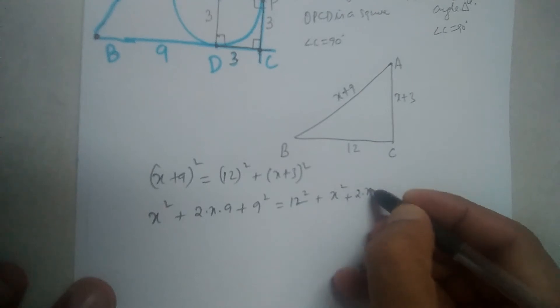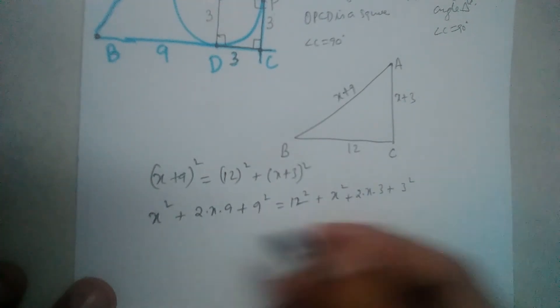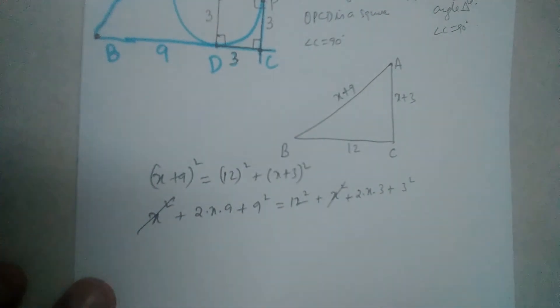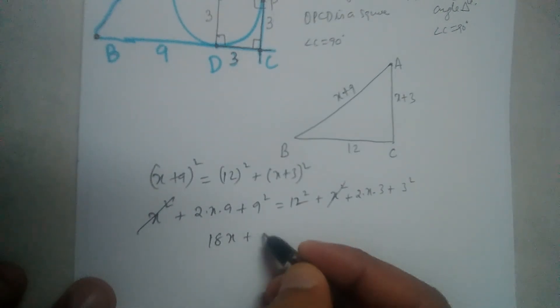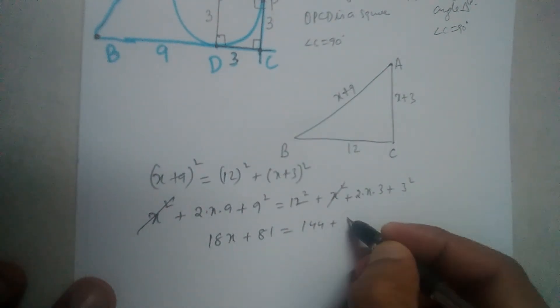X² here will get canceled. So this is 18X plus 81 equals 144 plus 6X plus 9.